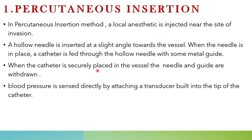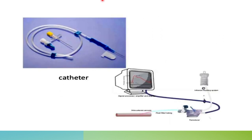When the catheter is securely placed in the vessel, the needle and the guides are withdrawn. Blood pressure is then sensed directly by attaching a transducer built into the tip of the catheter. The transducer at the catheter tip senses the blood flow pressure. A hollow needle is used to fix blood pressure measurement, and a transducer is connected to the apparatus.